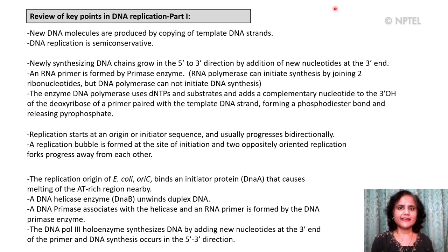A DNA helicase enzyme, DNA-B, unwinds the duplex DNA. A DNA primase associates with the helicase and an RNA primer is formed by the DNA primase enzyme. The DNA polymerase 3 holoenzyme synthesizes DNA by adding new nucleotides at the 3' end of the primer, and DNA synthesis occurs in the 5' to 3' direction.